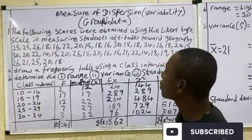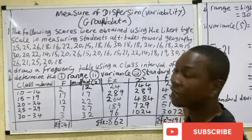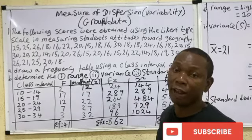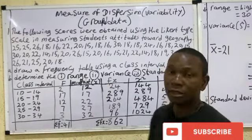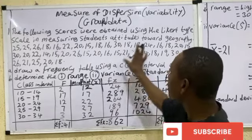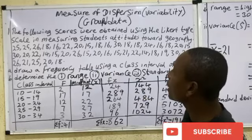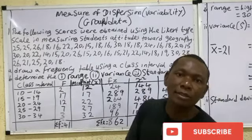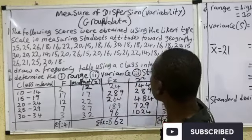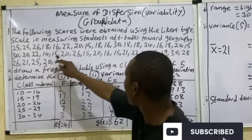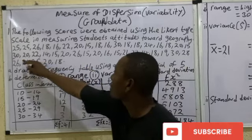The first thing you do is draw the frequency table using a class size or class width of five. You don't just start drawing arbitrarily — you take a look at the values, find the lowest number and the highest number. Looking at these values, the lowest number is 14 and the highest number is 30.